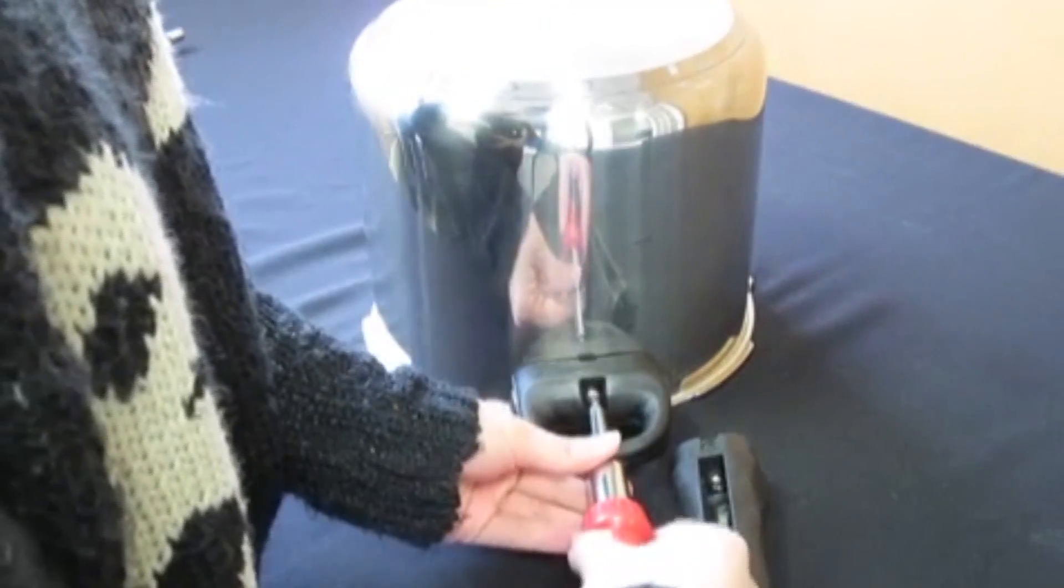To remove the base handle and helper handle, simply take a Phillips screwdriver and unscrew both of the handles one at a time.